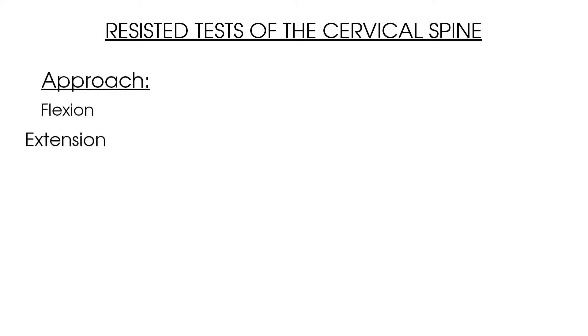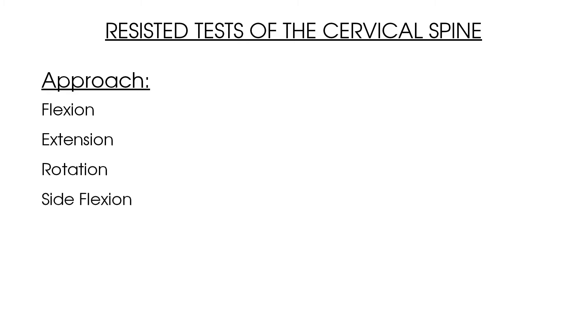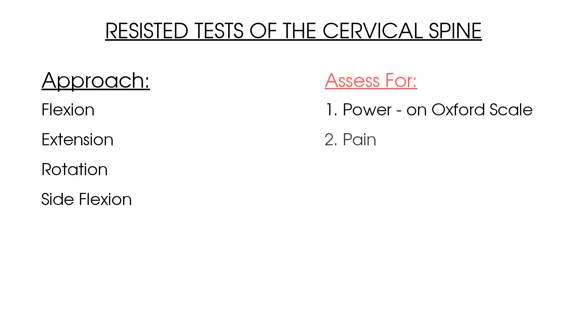Let's summarise this video on resisted tests of the cervical spine. Test resisted cervical spine flexion, extension, rotation, and side flexion as part of your patient examination. Make sure you are aware of the different handling techniques for each test. Score the patient's strength from 0 to 5 on the Oxford scale and look out for any pain when the resisted tests are performed. Consider the regular cheat patterns mentioned in this video so that you know you are accurately testing each movement.